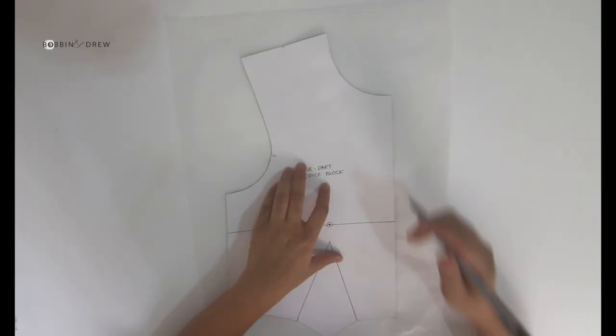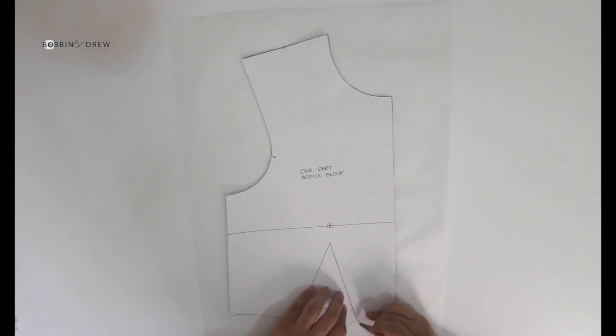Trace the bodice block and draw the waist dart to the bust point, making sure to transfer the armhole notch and the mid shoulder point.